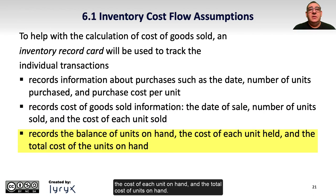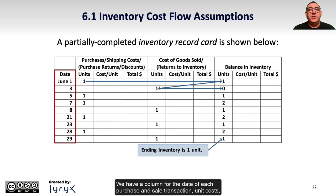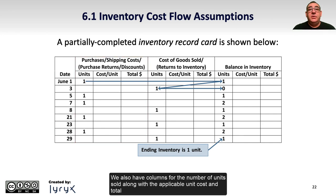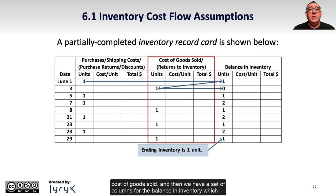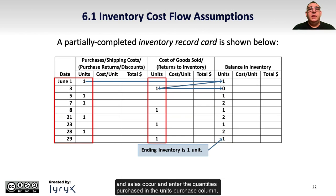The card also records the balance of units on hand, the cost of each unit on hand, and the total cost of units on hand. The inventory record card has columns for the date of each purchase and sale transaction, unit cost, and total cost for purchases, returns, and discounts. There are also columns for the number of units sold along with the applicable unit cost and total cost of goods sold, and a set of columns for the balance in inventory including the number of units, the related unit cost, and total cost. The quickest way to set this up is to identify all dates for purchases and sales, entering quantities purchased and units sold in the appropriate columns.